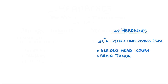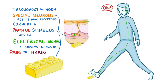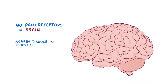Normally throughout the body, there are special neurons that act as pain receptors. These neurons convert a painful stimulus into an electrical signal that conveys the feeling of pain to the brain. The brain itself doesn't have pain receptors, but nearby tissues in the head and neck like the blood vessels, meninges, and muscles do.